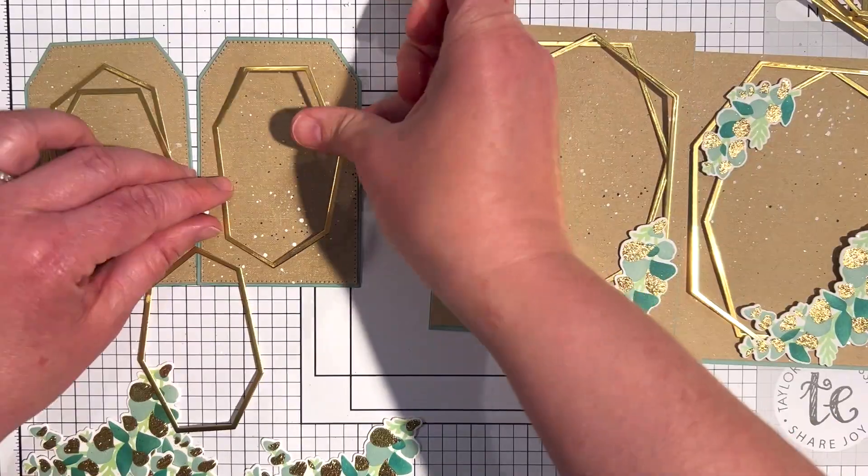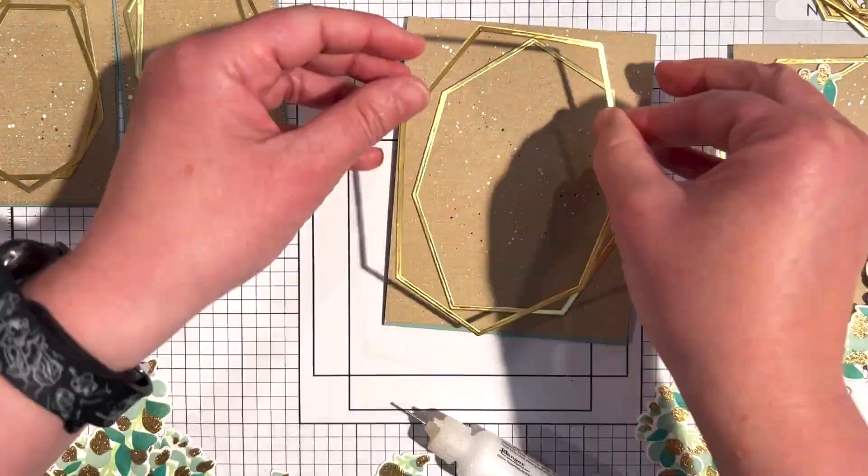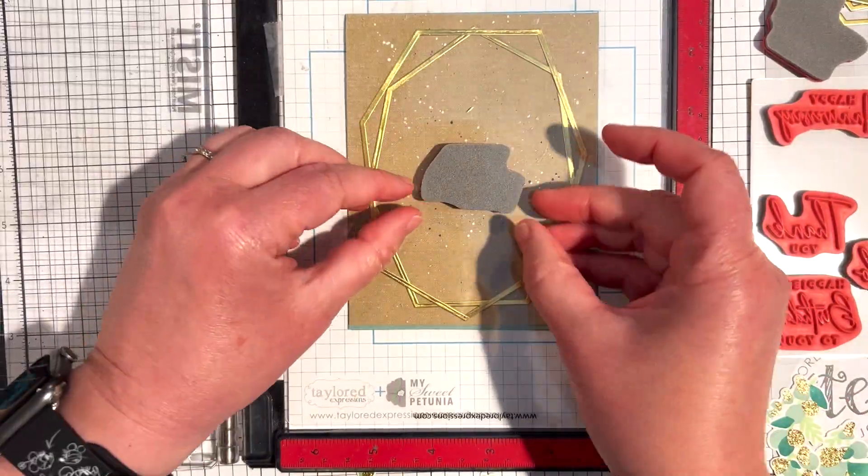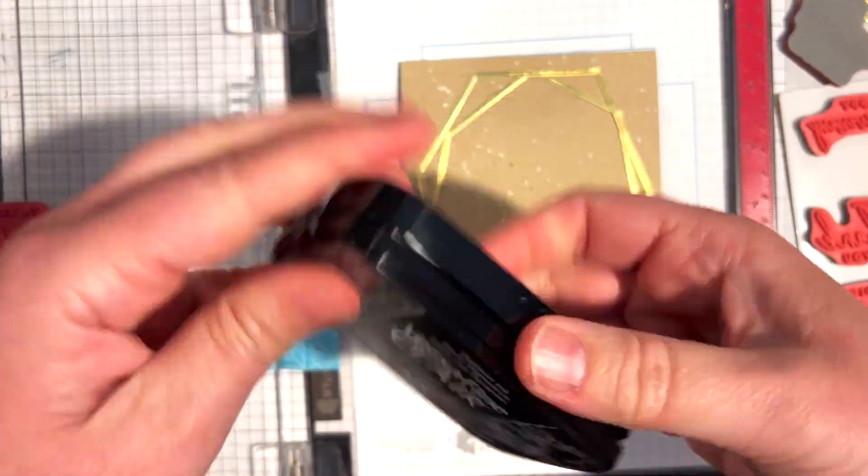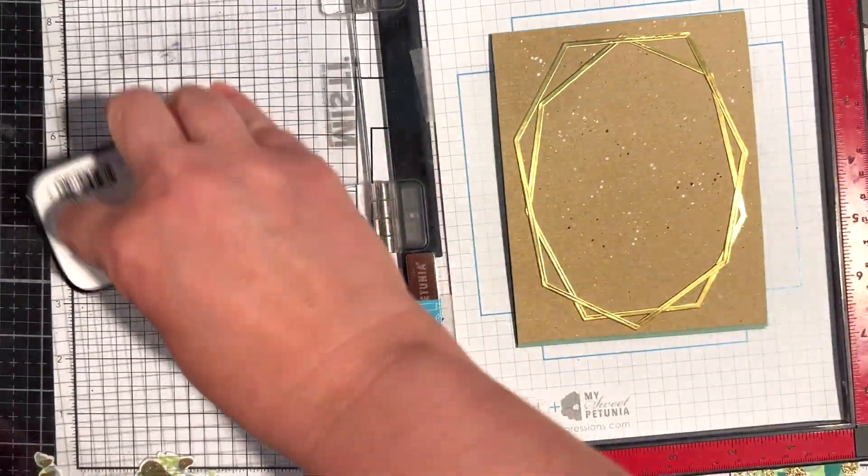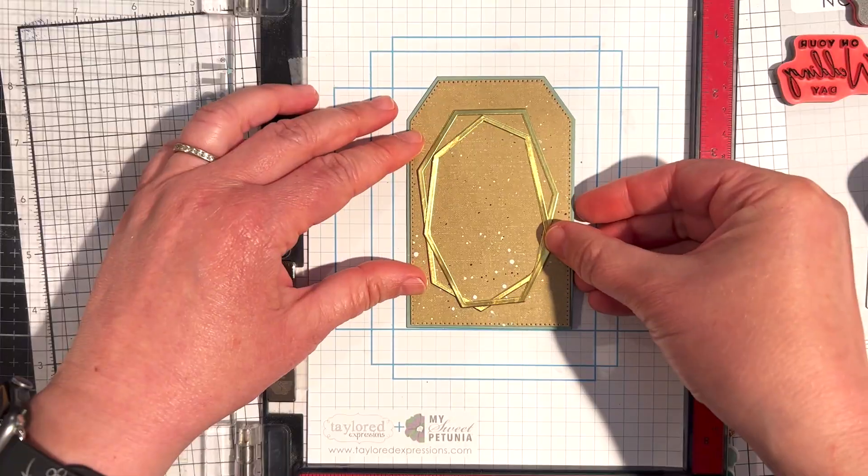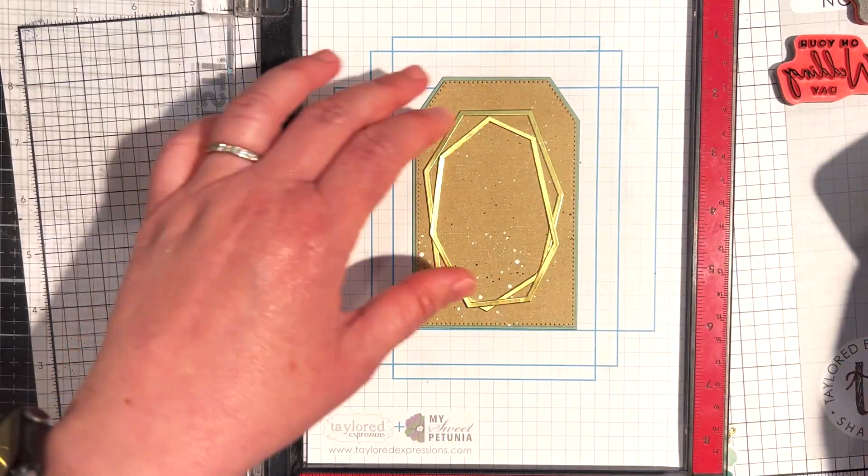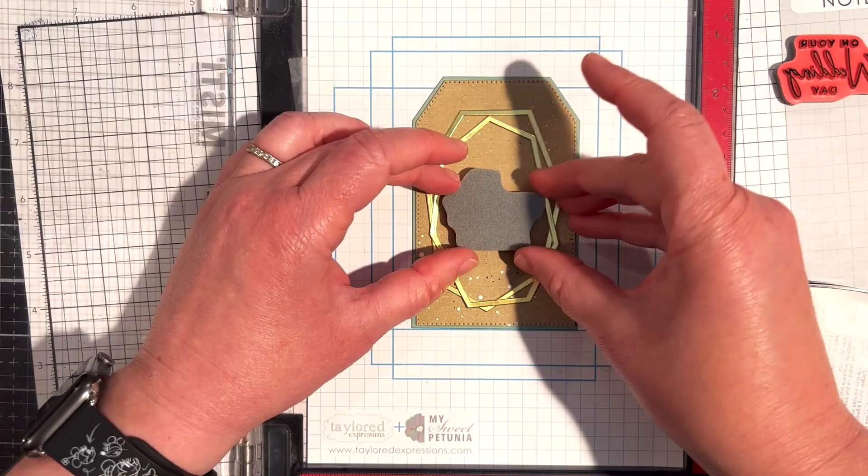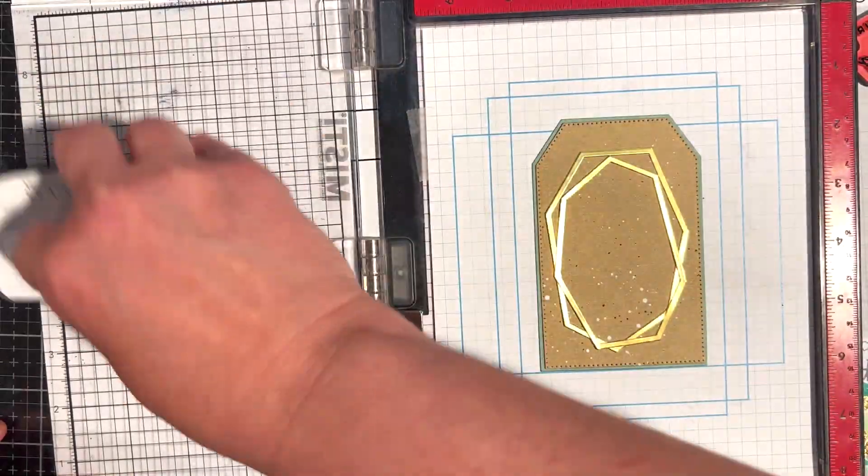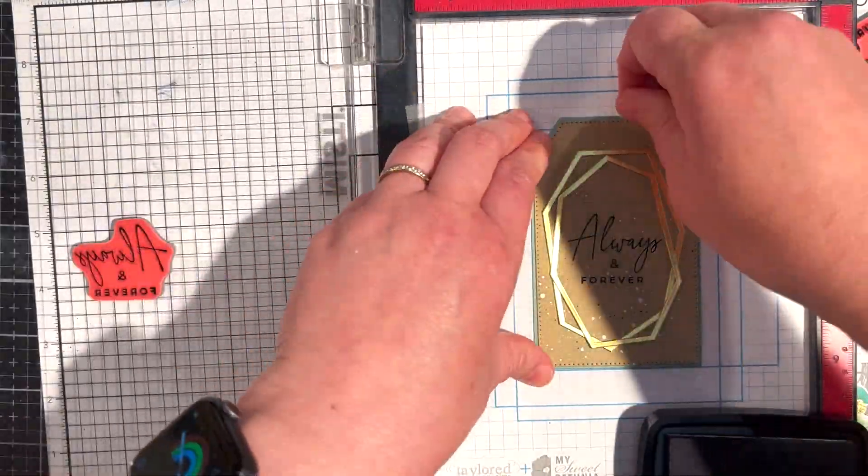Next I stamped the 'on your wedding day' sentiment in the center of the frames on the cards. I'm lining this up in my MISTI and I'm stamping that with versafine clair nocturne ink. Then for the tags, I stamped the 'always and forever' sentiment.